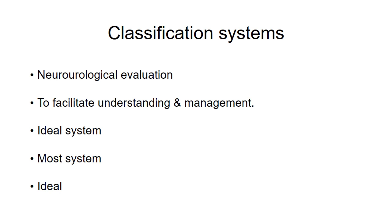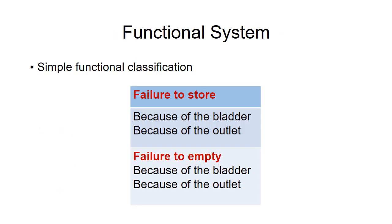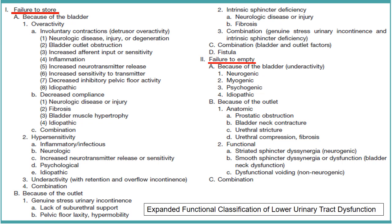After neurourological evaluation, we classify the lower urinary tract dysfunction. A good classification system helps in better understanding and management. The ideal system should include clinical symptoms, conclusions from urodynamic studies, and should help assess the type and site of neurological lesion. Most classifications today describe lower urinary tract dysfunction secondary to neurological disease or injury. At present there is no ideal perfect system. A simple functional classification divides dysfunction into failure to store and failure to empty.